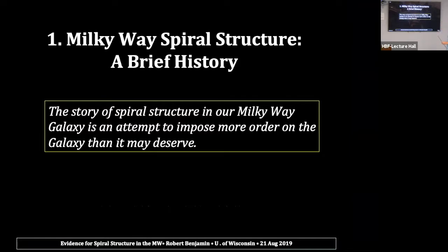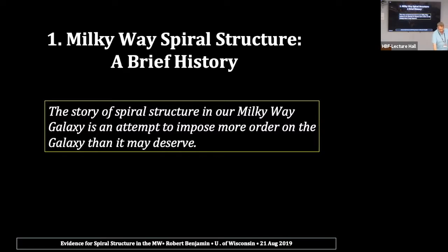So, spiral structure history — in my opinion, having learned a lot in this story, the history of spiral structure in our Milky Way is an attempt to impose more order on the galaxy than it may deserve. Depending on where you go, sometimes people think spiral structure is solved — we've got this artist's picture that tells us where everything is. Other people say we will never know what spiral structure is and don't believe there's any evidence. You'll find this diversity of opinion in the community. I think the answer is somewhere in between.